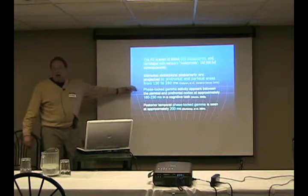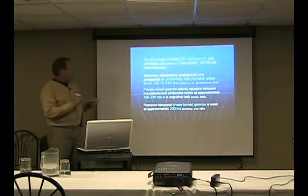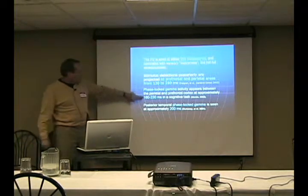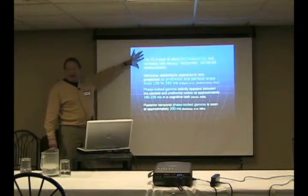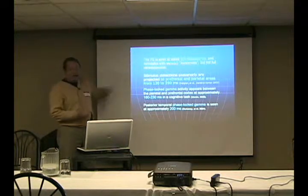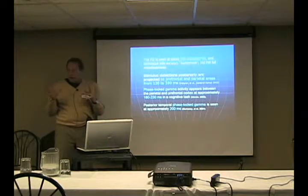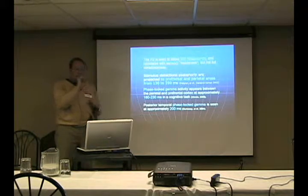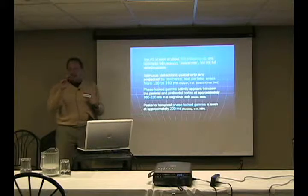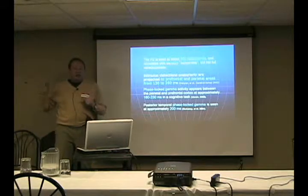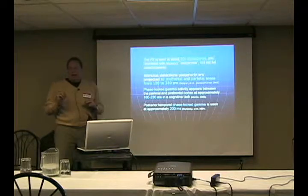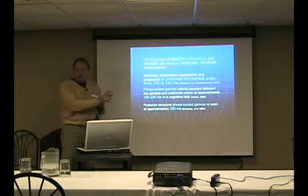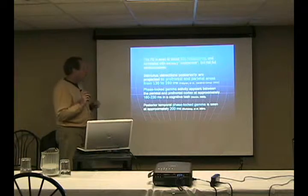Phase locking of gamma happens when these occur also. At the 180 to 230 millisecond point, this 200 millisecond time when it arrives up front, gamma will occur as a burst. Gamma occurs in these little burst packets that are nested within slower rhythms. Gamma will nest within theta, which will nest within slow cortical potentials.